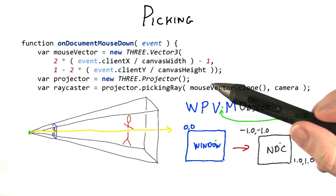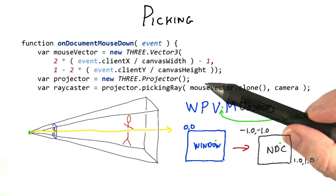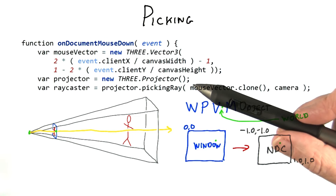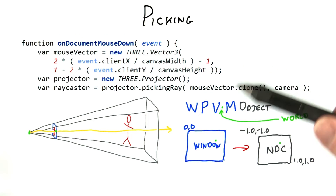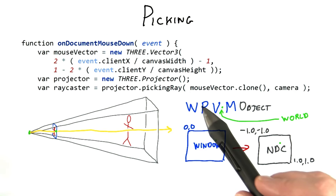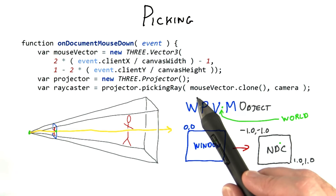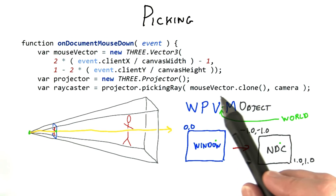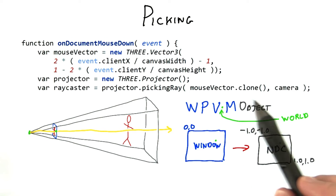We next create a projector object. It's better to create this object once during initialization and reuse it, but I wanted to show the code all in one piece. The final line of code does the heavy lifting — it takes the NDC coordinate and forms a ray caster object from it.